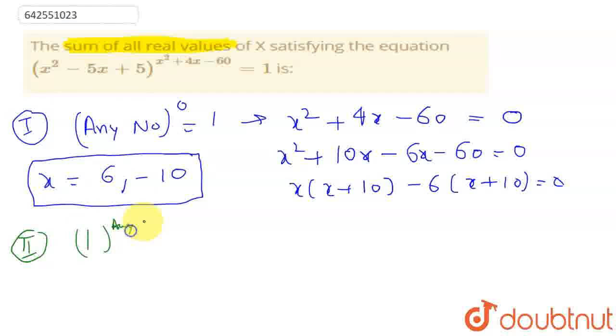Our second case will be that 1 to the power any number will be equal to 1. So we can write x squared minus 5x plus 5 should be equal to 1. Therefore, x squared minus 5x plus 4 should be equal to 0.